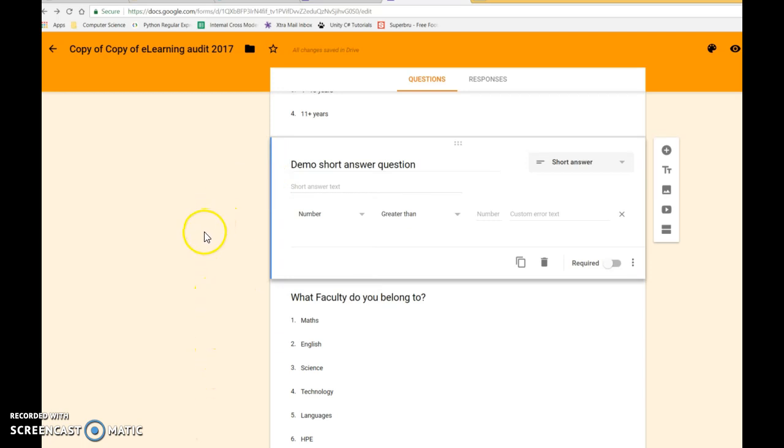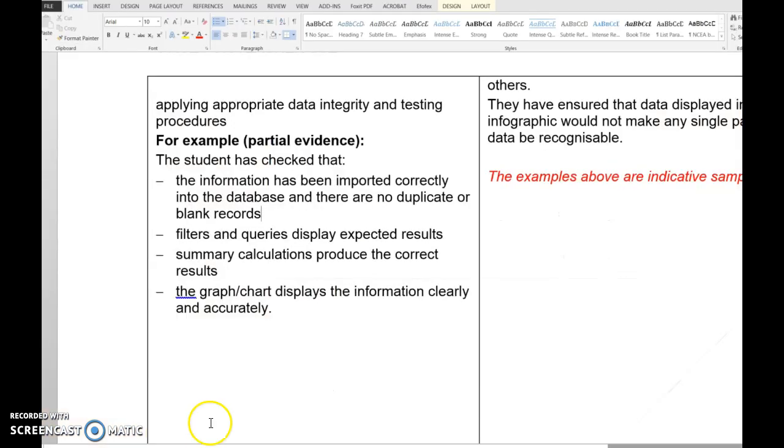That's a really significant part. If you do that, you're a long way on the pathway. The second thing: filters and queries display expected results. That's just a sanity check really. If you've got a filter, you've put something in and it looks right, then it probably is right. You could just say that your queries display the expected number of results or I double-checked it.